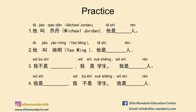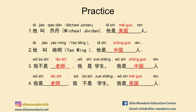Now it's time for exercise. Please use the newly learned language points and words. Let's check the answers. 她叫乔丹,她是美国人。她叫姚明,她是中国人。我不是老师,我是学生。我是中国人。我是老师,我不是学生。我是美国人。